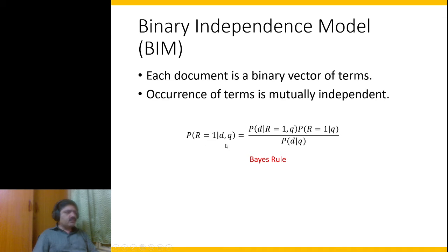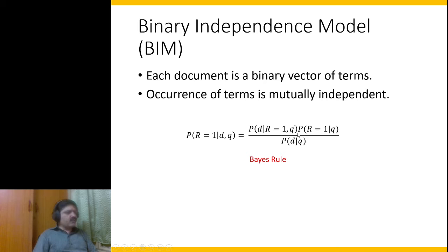To obtain the probability of relevance, we observe the probability of observing a document given that it is relevant and the query. So we have: P(r=1 | d, q) = P(d | r=1, q) × P(r=1 | q) / P(d). We are just flipping this across using Bayes rule.